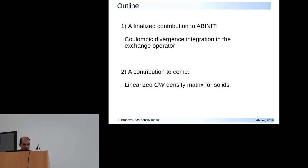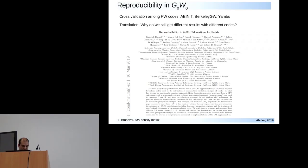So what I've done in Abinit in the last year: there are two things I want to speak about today. One is a finalized contribution and one is just an idea that Mark and I will be doing in the next months and years. My finalized contribution is how to treat the Coulomb divergence that you have in the exchange operator. That's something that sounds very technical, but it has to be done nevertheless.